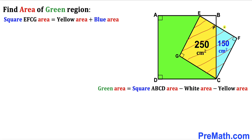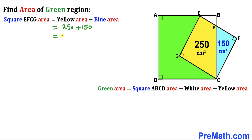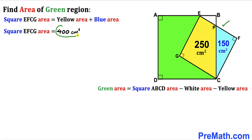Let's focus on square EFCG. We can see the area of square EFCG consists of two regions: the yellow region and the blue region. The yellow region is 250 and the blue region is 150, so the total area equals 250 plus 150, which is 400 centimeter square.